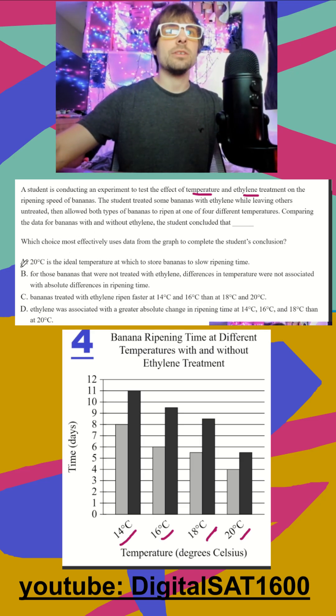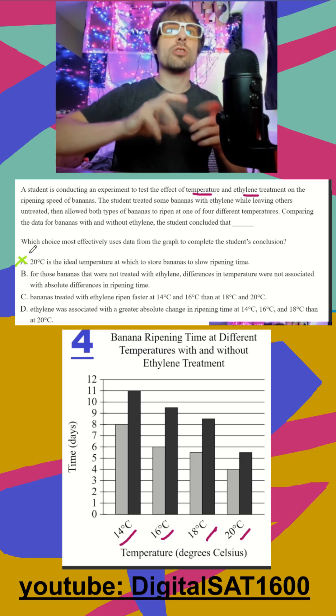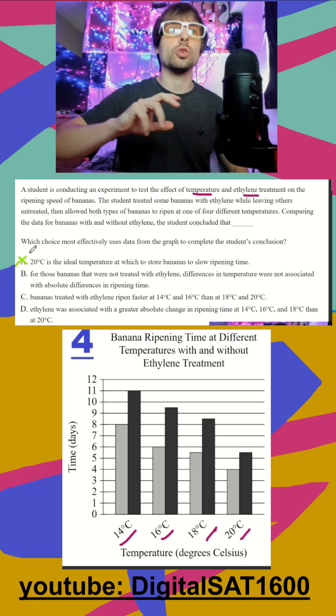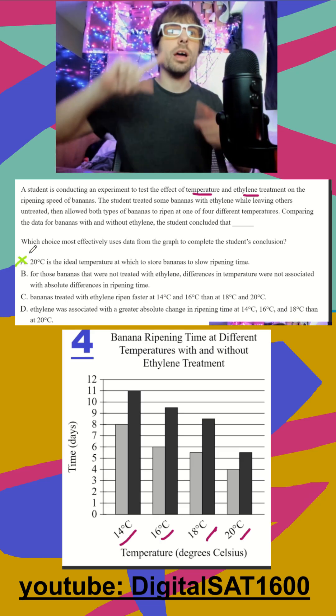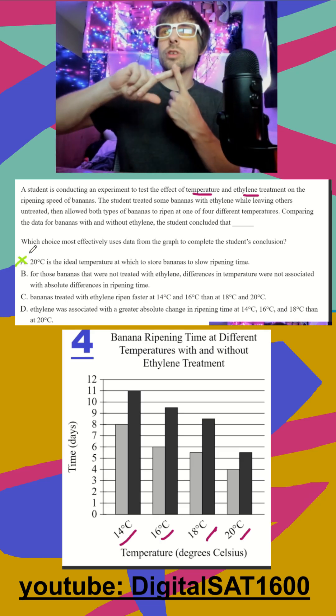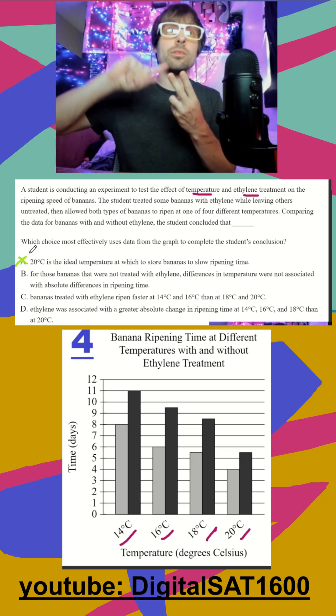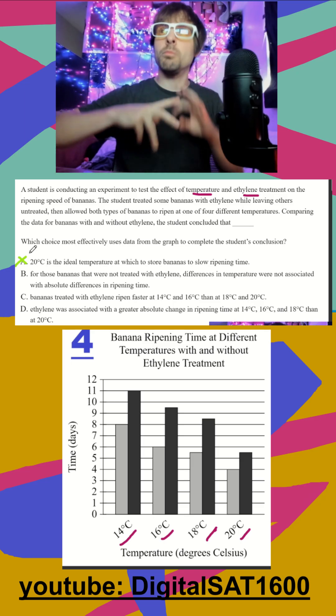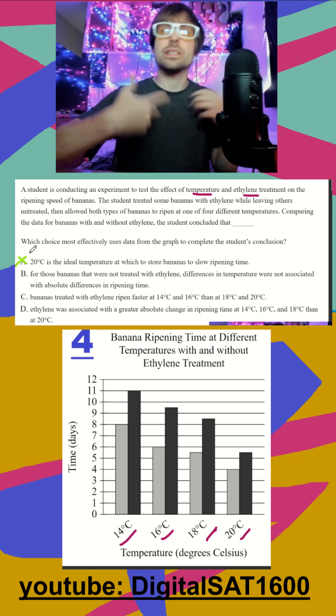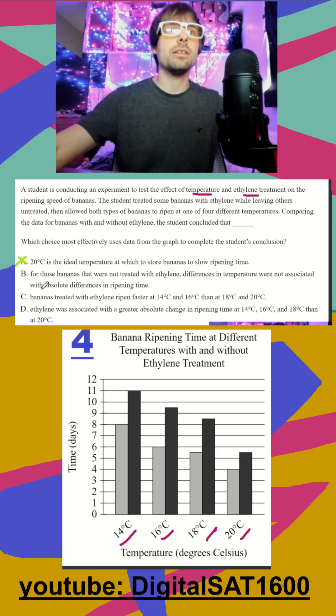Option A says 20 degrees is the ideal temperature — no. We want a general conclusion about how as temperature increases and with ethylene, both increase ripening speed. That doesn't fit either.